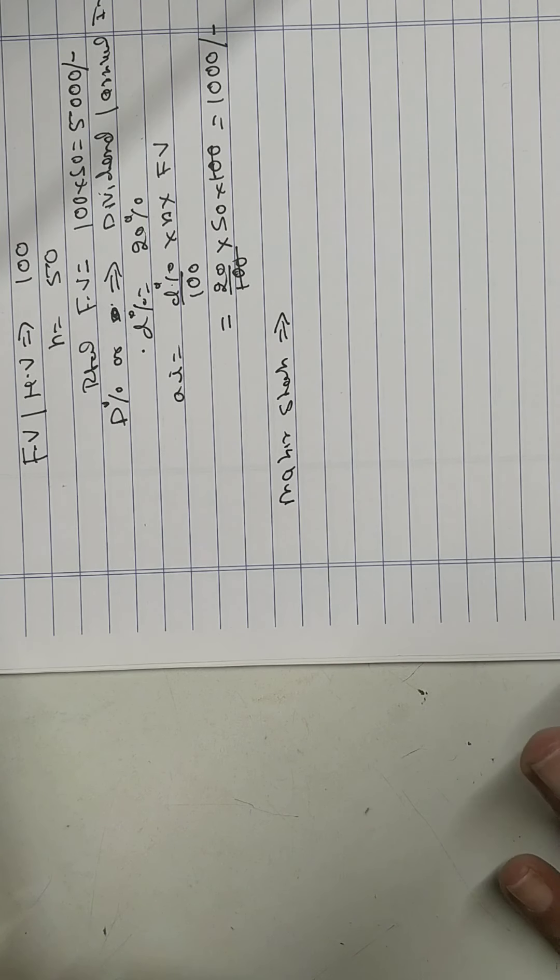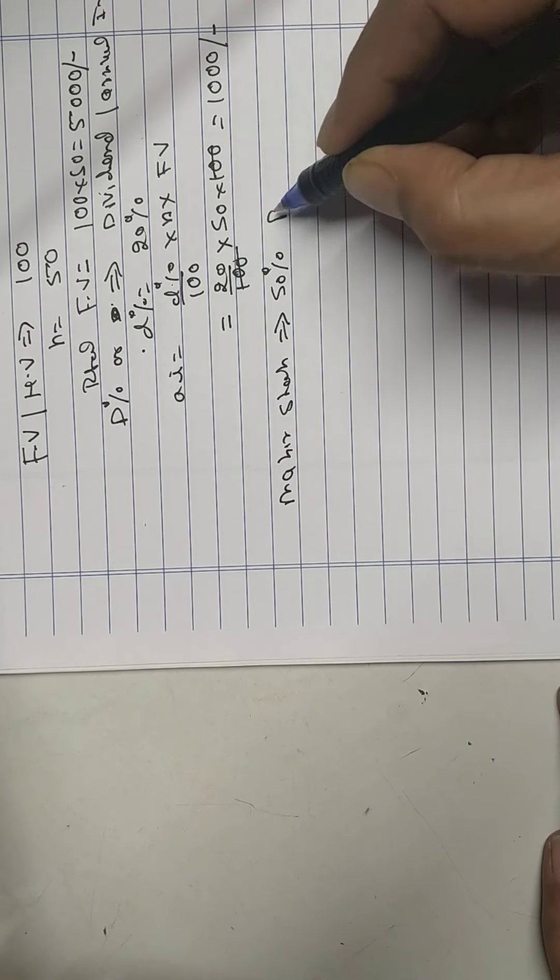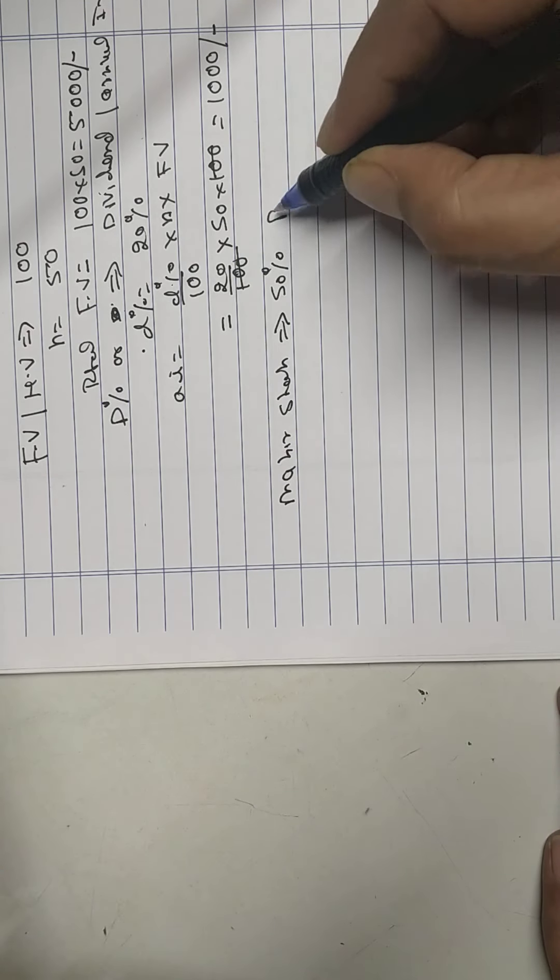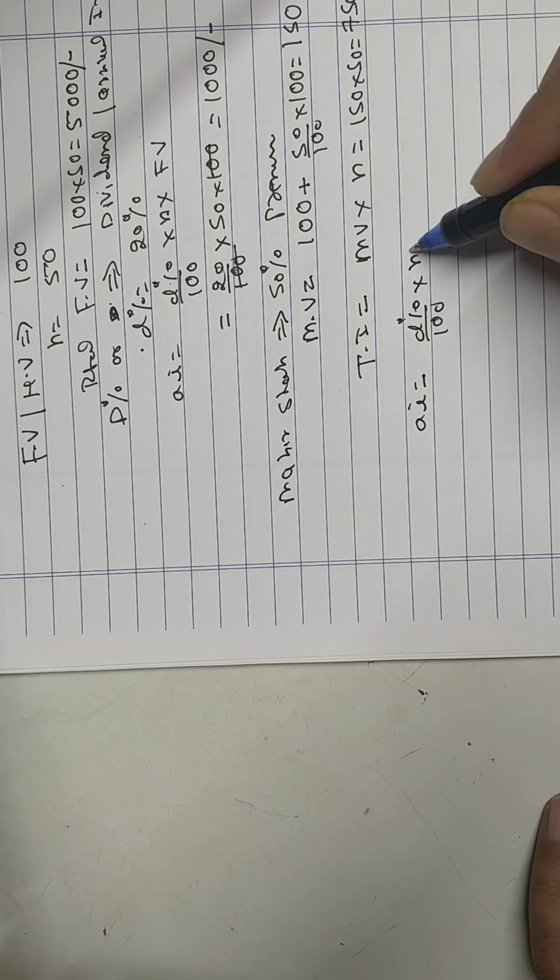That is called premium. Either they mention 'premium 20 rupees' which means face value plus 20, or '20% premium' - find the 20% of face value and add it to face value. So Mahir Shah wants to buy ASR Tutorial Private Limited share at 50% premium. That is called MV, market value. He has to pay 100 rupees face value plus 50% of face value. Total he has to pay 150 rupees for each share.